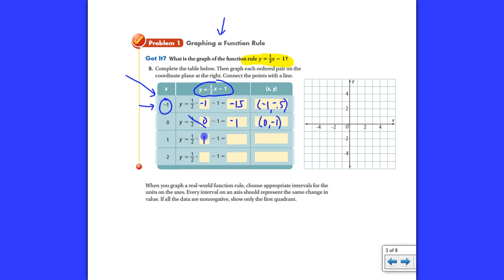And we have, that is one, so you end up with one-half minus one. And that comes out to be negative 0.5, or negative one-half. So, that is the ordered pair one, negative one-half.